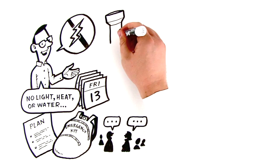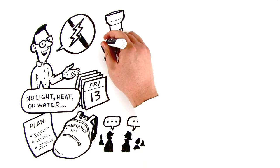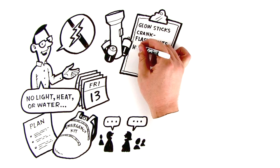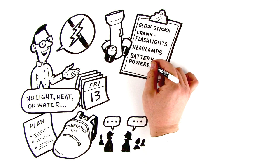Stow flashlights and extra batteries around your house to use when the lights go out. Other safe lighting options include glow sticks, crank flashlights, headlamps, and battery-powered lanterns.